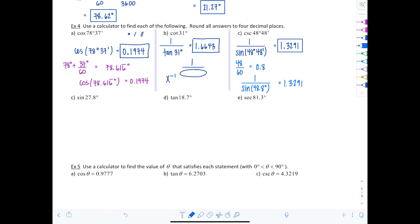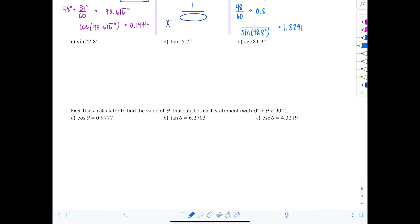Very nice. Let's move on to a few more examples. Sine of 27.8 degrees is much easier because everything's in degrees, no reciprocals needed. Just punch it in the calculator and you should get 0.4664. Next one is tangent of 18.7 degrees, you should get 0.3385. And lastly, secant of 81.3 degrees, so remember secant's reciprocal function is cosine. This is 1 over cosine of 81.3 degrees, and you should get 6.6111.